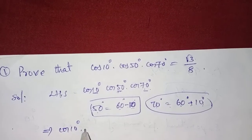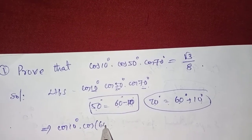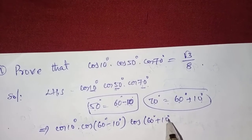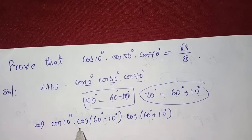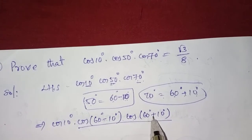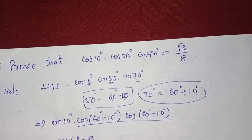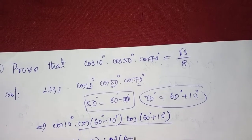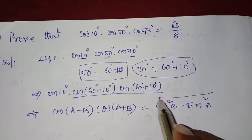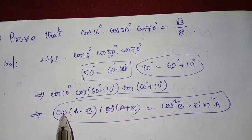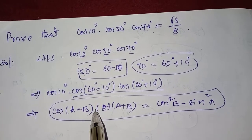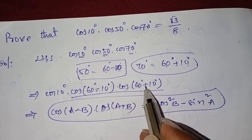So we have cos 10 degrees into cos of 60 degrees minus 10 degrees into cos of 60 degrees plus 10 degrees. Observe that cos(60° - 10°) into cos(60° + 10°) fits the basic formula: cos(A - B) · cos(A + B) = cos²B - sin²A. We apply this formula here.